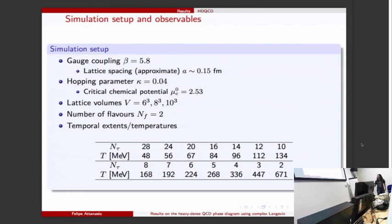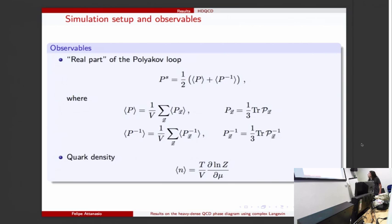The observables we studied were the Polyakov loop - we do this symmetric version of the Polyakov loop, P plus P inverse, because we wanted to look only at the real part but we cannot take the real part here because it's not holomorphic. At mu equals zero this is the same as taking the real part. Also the quark number density.